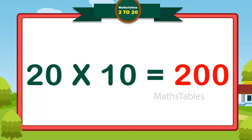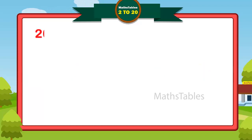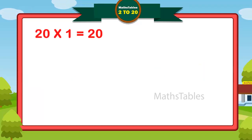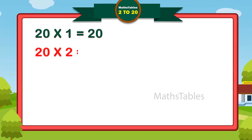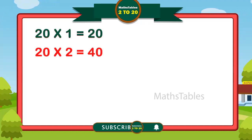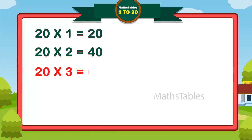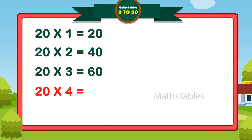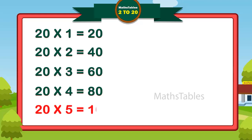20×1 is 20, 20×2 is 40, 20×3 is 60, 20×4 is 80.